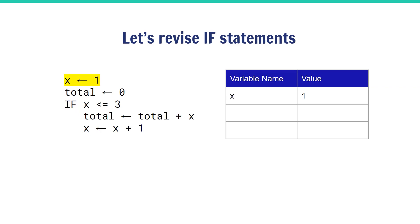One is assigned to x, zero is assigned to total. We're checking the boolean expression whether x is less than or equal to three. That's true, so we go in and execute the indented lines of code.